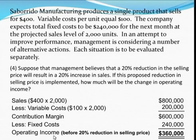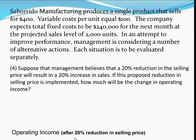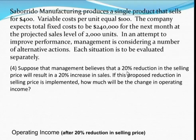How about the operating income after the implementation of the 20% reduction in selling price? With the proposal, the selling price would become $320. That is $400 multiplied by 80%. Or if you want, $400 multiplied by 20%, or 0.2, equals $80. Then subtract that $80 from $400 to get the same new selling price of $320.